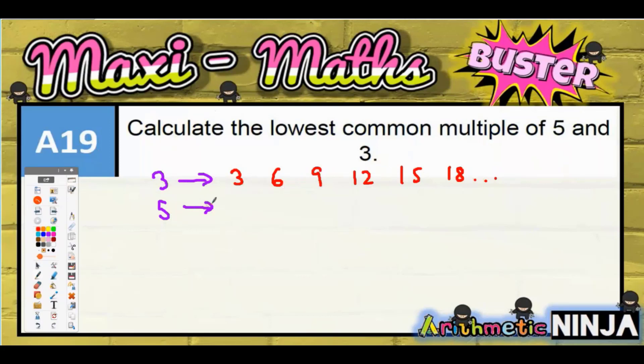But let's see what happens with the fives: 5, 10, 15, 20, 25, 30. Now as you can see, I'm looking for the lowest common number in both lists, and I have got 15 in both lists. 15 is in that list and 15 is in that list, and that is indeed the lowest number that appears in both lists.